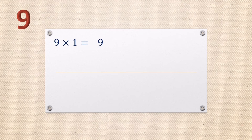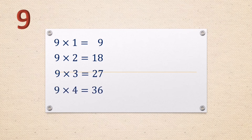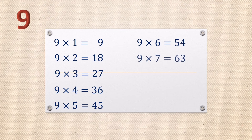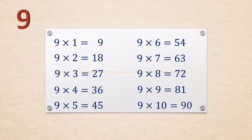Nine: kau. kau it kau, kau di chap pue, kau sa di chit, kau si sam lak, kau go si go, kau lak go si, kau chit lak sa, kau pue chit di, kau kau pue it, kau siang chap, kau chap.